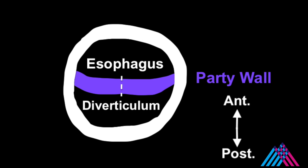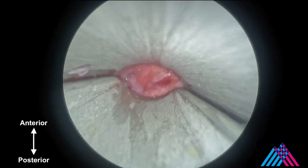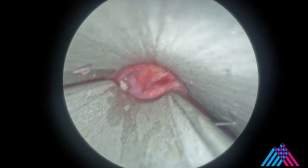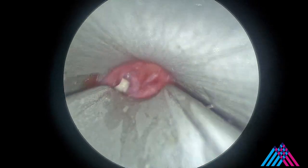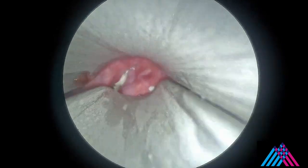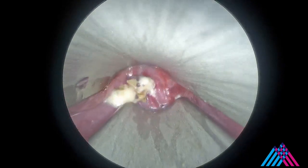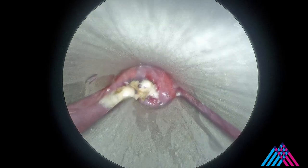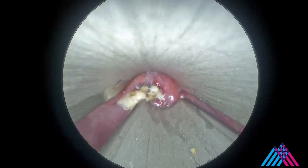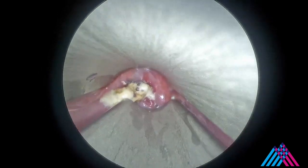When looking from superior, the esophagus will be anterior and the diverticulum posterior. The party wall will appear as the thick horizontal wall of tissue. A Weerda bivalve diverticuloscope is placed in the post-cricoid area in the proximal esophagus. As the laryngoscope is advanced, old food particles are encountered and must be suctioned.